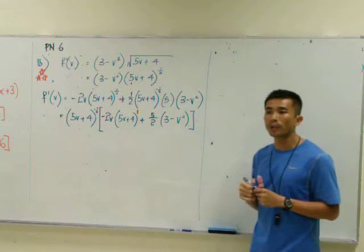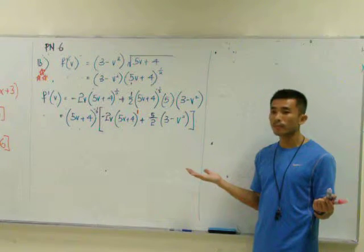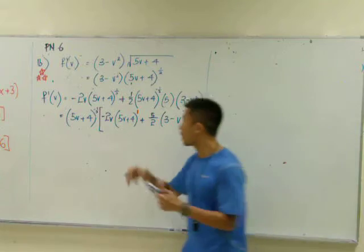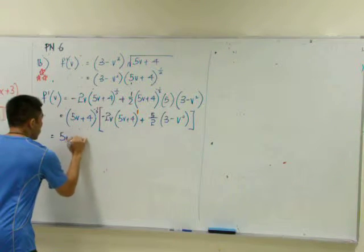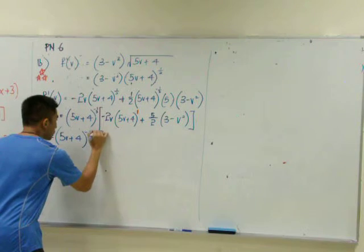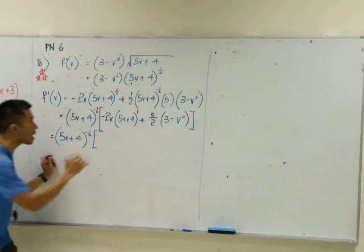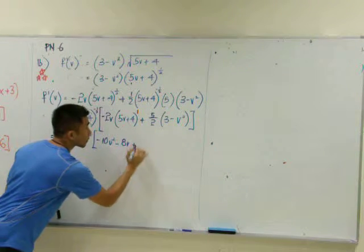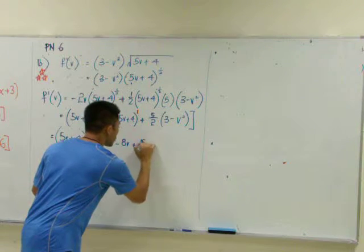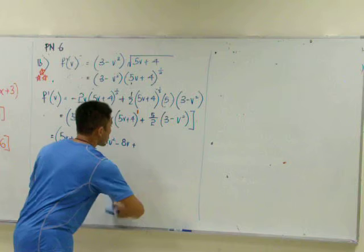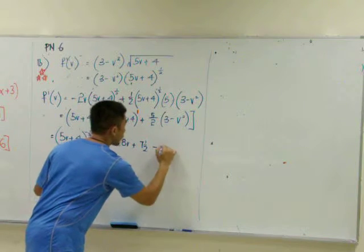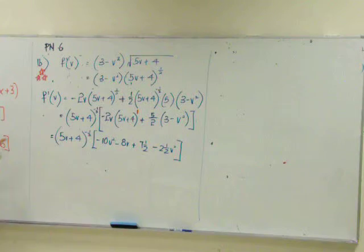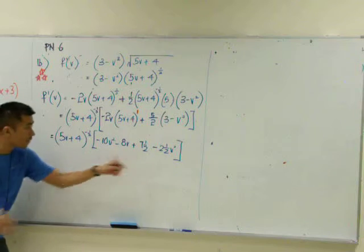Now tell me what do you need to do next? Factorize. We factorize. Simplify the square bracket. Everything, term by term, multiply inside. I only simplify. Now we have to simplify further.